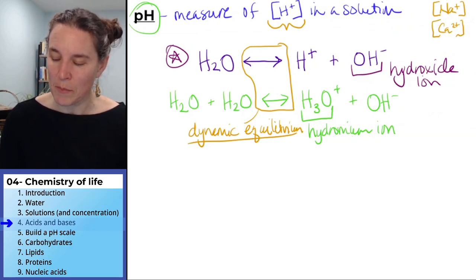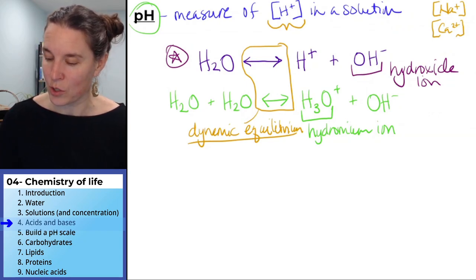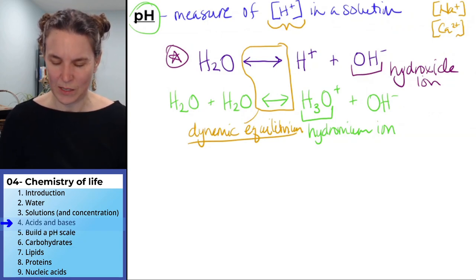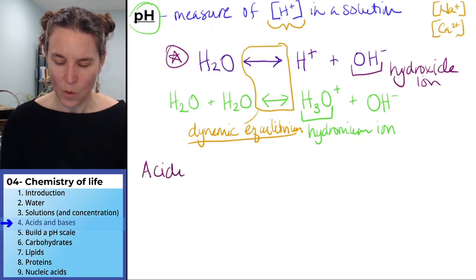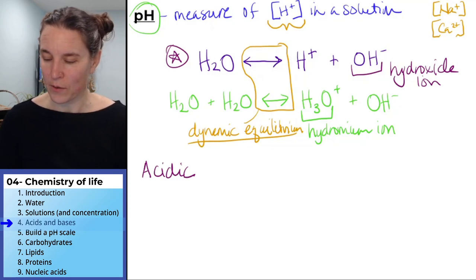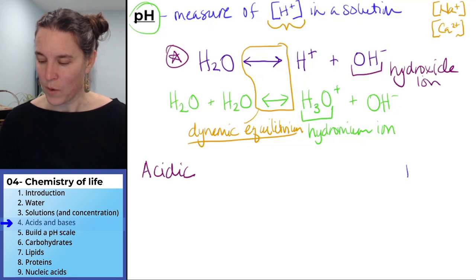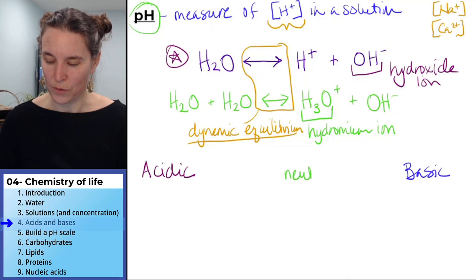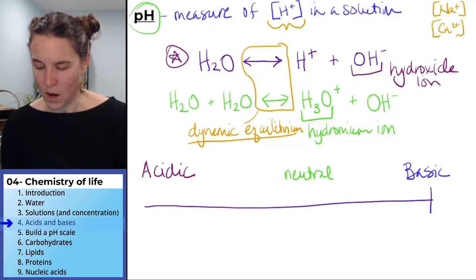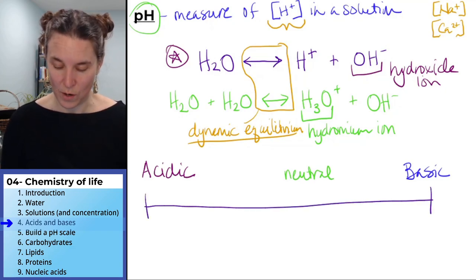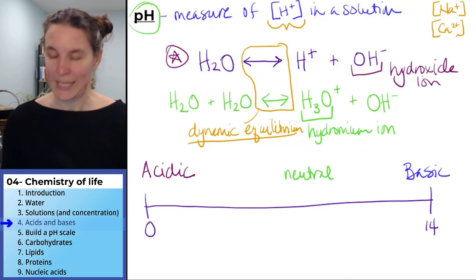If pH is a measure of the hydrogen ions in a solution, the concentration of hydrogen ions in a solution, then we're going to have acidic solutions. We have basic solutions and we have neutral solutions and these all are on a spectrum. The spectrum goes from zero to 14 and neutral is seven.